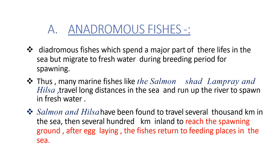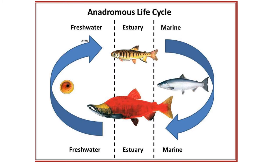After egg-laying, the fishes return to feeding places in the sea. In this diagram you can see the anadromous life cycle. The first zone is fresh water, the second is estuary and the third is marine water. You can see the difference and different types of fishes.